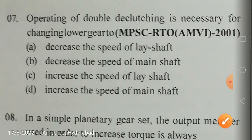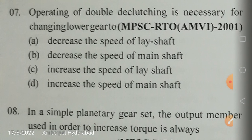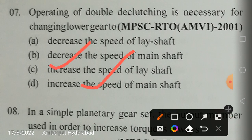Operation of double declutching is necessary for changing to a lower gear. In any gearbox there are three shafts: clutch shaft, lay shaft, and main shaft. Gears on the lay shaft are connected to gears on the main shaft; lay shaft gears are fixed while main shaft gears are movable via a dog clutch or synchronizer. The answers are C and D — increase the speed of the lay shaft and increase the speed of the main shaft.